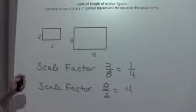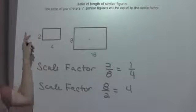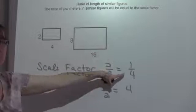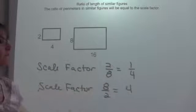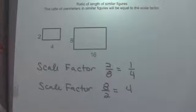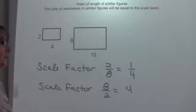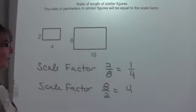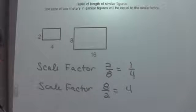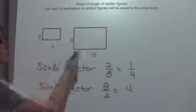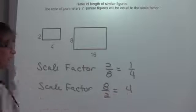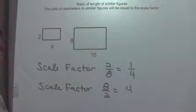The perimeter of these two figures will come up with these two scale factors. It will either be a scale factor of 4 or a scale factor of 1/4, depending on if I'm enlarging it or reducing it. To keep it simple, I'm going to go with the scale factor of 4. When I compare these two perimeters, I will be looking for a scale factor of 4.